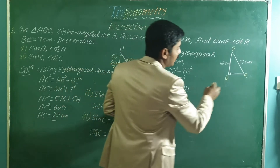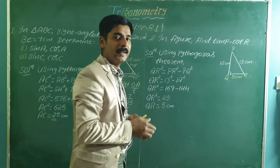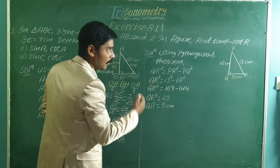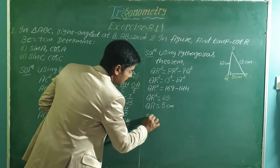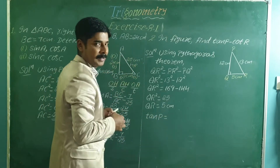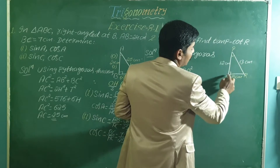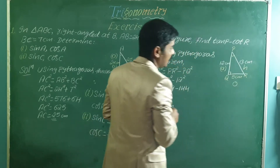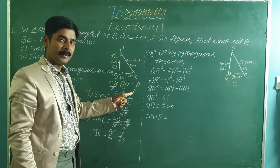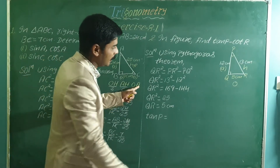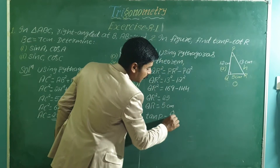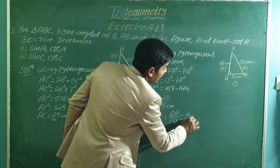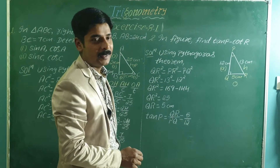Once we know all three sides, we can find the trigonometric ratios. Let us find tan P first. With respect to angle P, QR is the opposite side and PQ is the adjacent side. Tan of any angle is opposite over adjacent, so tan P equals QR over PQ, which is 5 over 12.